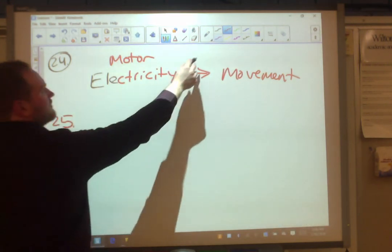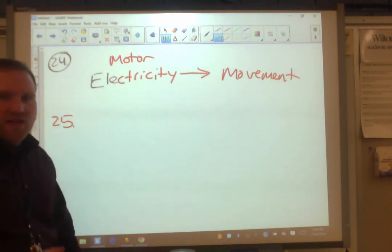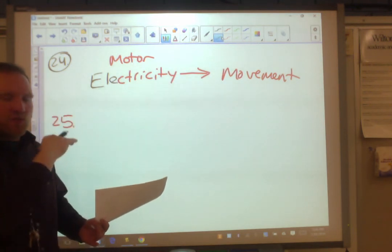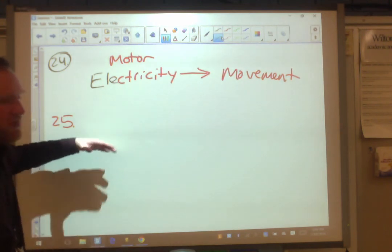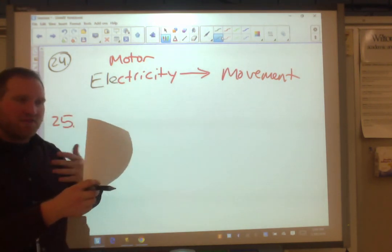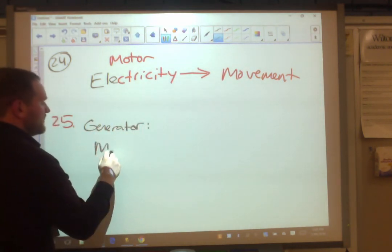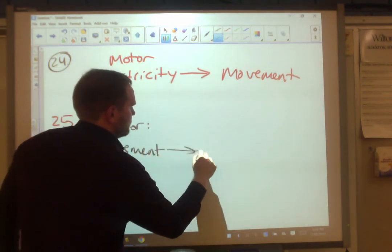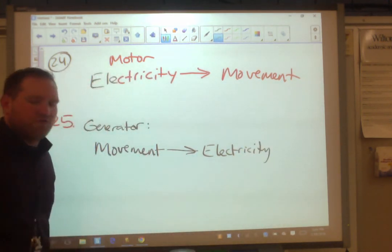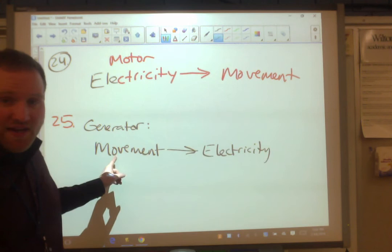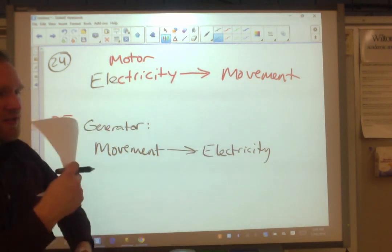25, what is a generator? It's just the opposite. A generator is something that takes movement and converts it to electricity. How does it do that? Faraday's law, electromagnetic induction. It's something we talked about earlier. Coil magnet relative movement. A generator is movement to electricity. Or sometimes it's referred to in terms of energy, mechanical energy into electrical energy. The idea here is that a motor and a generator can basically flip-flop.